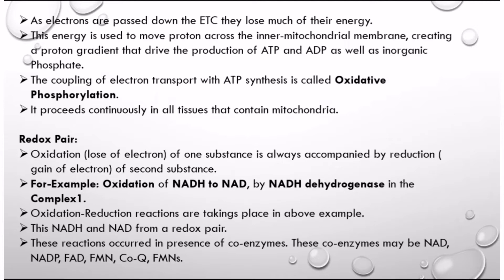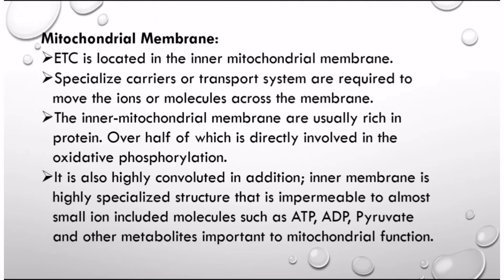NAD and NADH form a redox pair, as do FMN and FMNH2. These reactions occur in the presence of coenzymes, which may include NAD, NADP, FAD, FMN, coenzyme Q, iron, and sulfur. The ETC is located in the inner mitochondrial membrane.